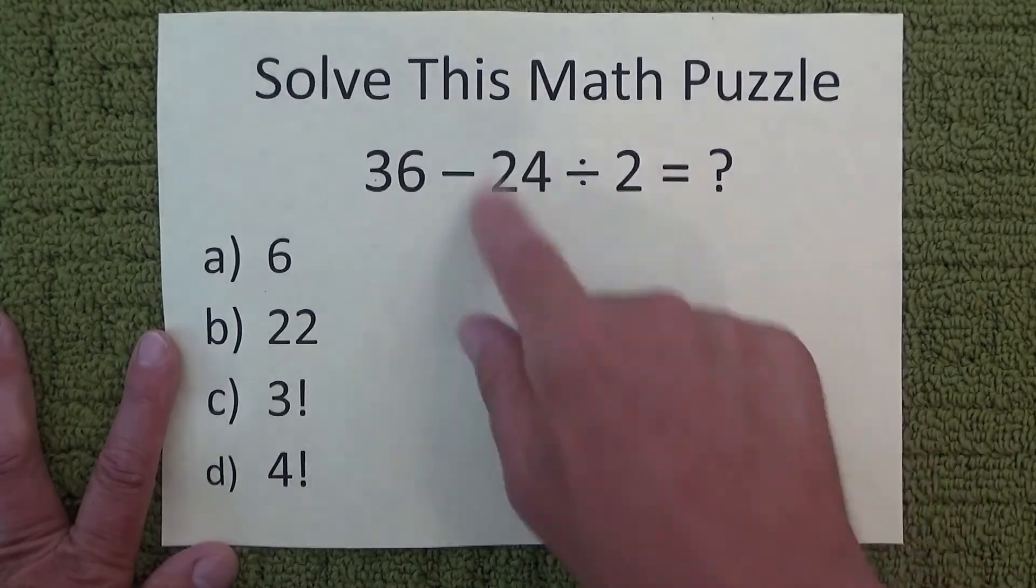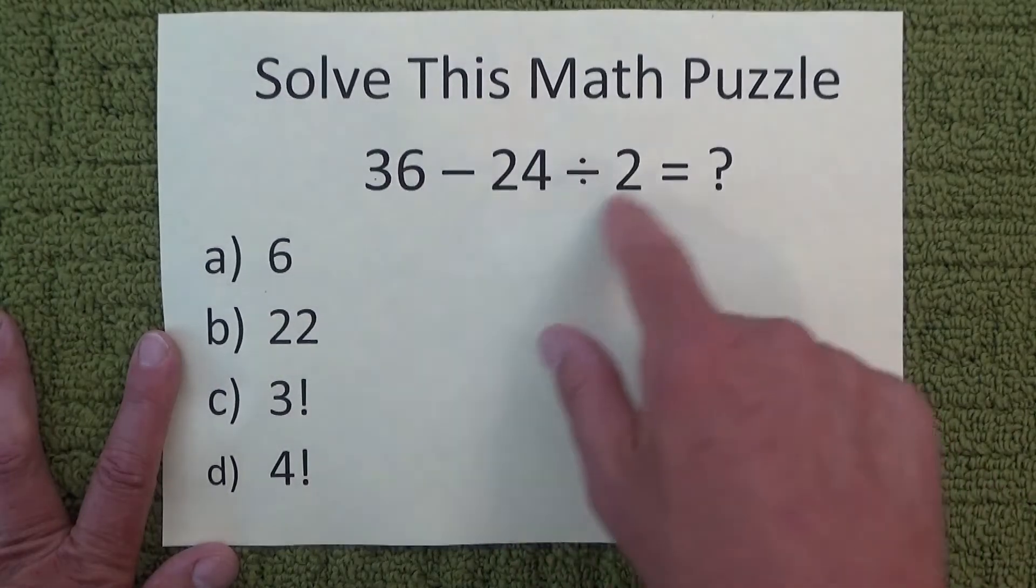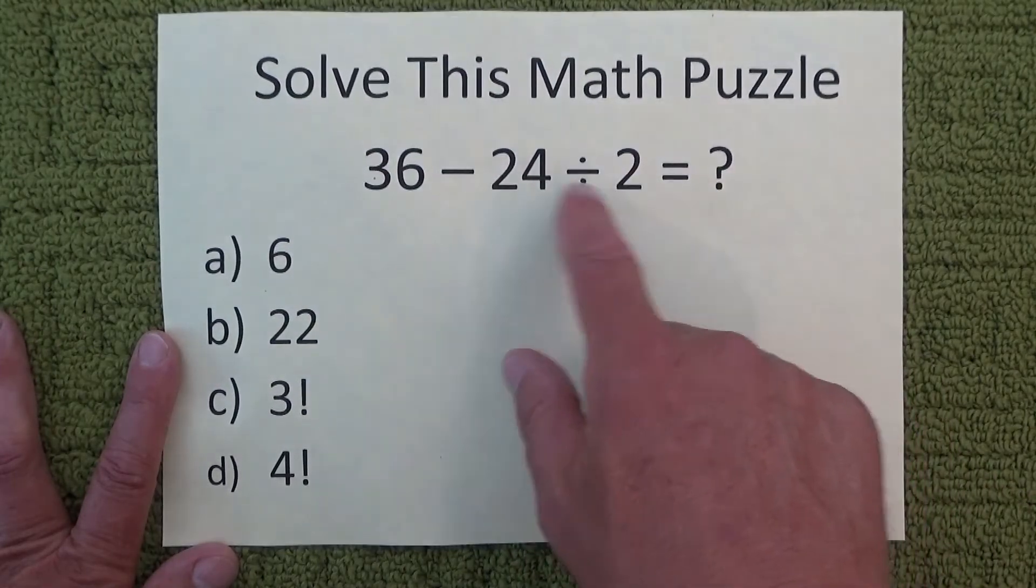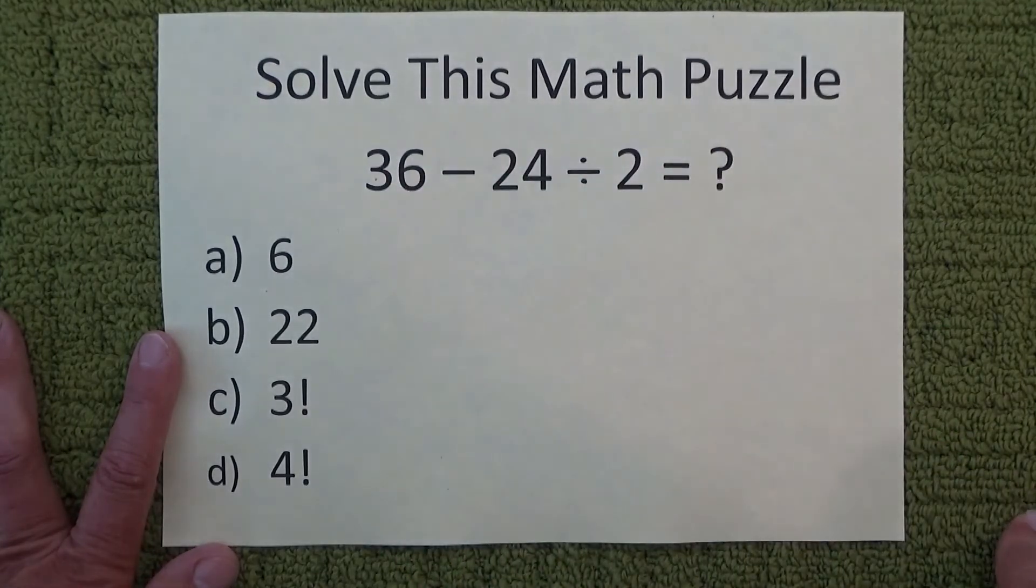The correct way to do this equation is you've got to do the division before the minus. So you do 24 divided by 2 first, which is 12. 36 minus 12 equals 24.